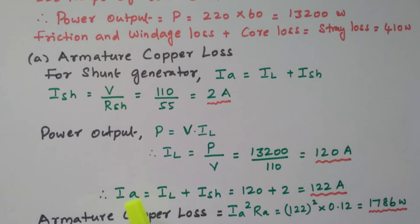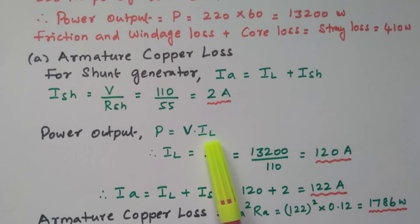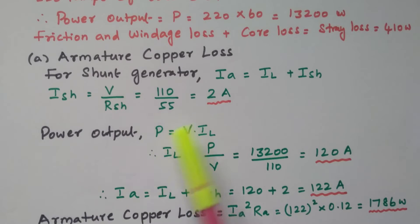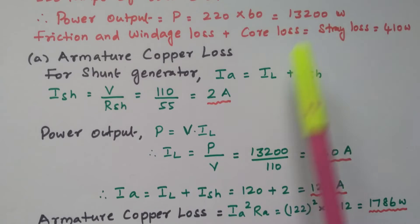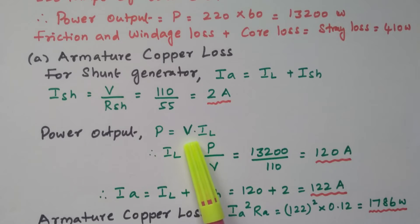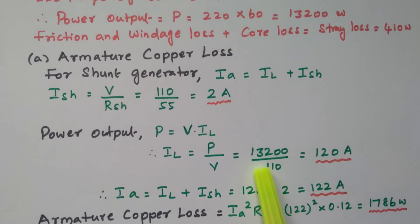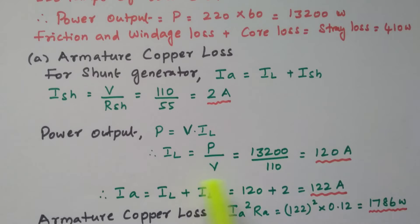Shunt field current is 2 amperes. Then power output P = V × IL. From that we can calculate IL because the power value is available — power is 13,200 watts and V is also available. So IL = P / V = 13,200 / 110 = 120 amperes.